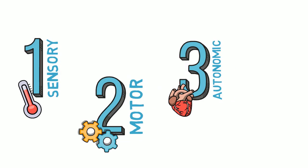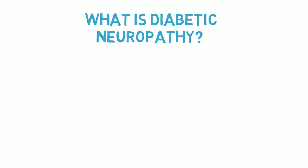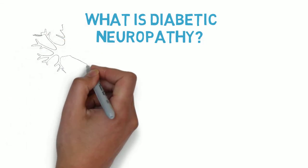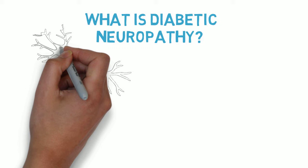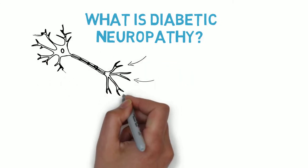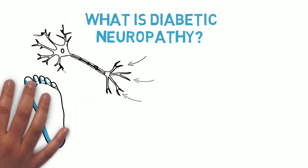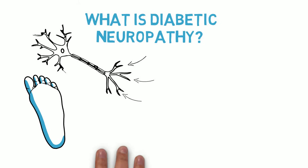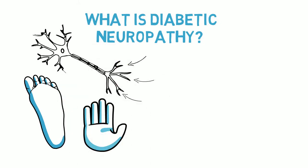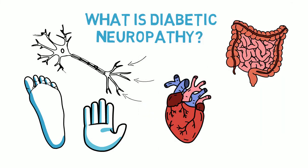So what is diabetic neuropathy? Diabetic neuropathy is a long-term complication of diabetes where damage occurs to the nerves, leading to the shrinking of axon terminals — here, here, and here. The longest axons seem to be affected first, and symptoms most commonly appear first in the feet and hands. Depending on the type of neuropathy, other organs can be affected, such as the heart, the digestive system, and the urinary tract.